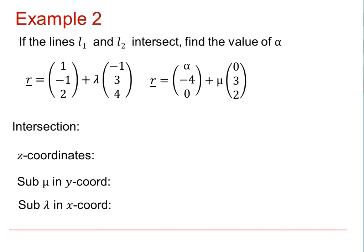In this example, we are told that if the lines L1 and L2 intersect, we need to find the value of alpha. Again, we can use the knowledge that the x, y, and z coordinates will have to be the same at the point of intersection.